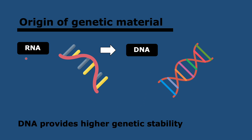Why did we move to DNA? DNA has much higher genetic stability. Complex organisms such as humans, animals, and plants have very long genetic material, so you want it to have genetic stability — because without it, that leads to mutations, cancer, deformities, and abnormalities. This is why DNA was probably chosen at some point by evolution because of its stability, but initially RNA because of its simplicity.